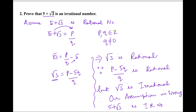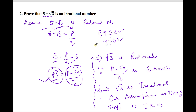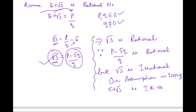Therefore, 5 + √3 is an irrational number. To summarise: first assume 5 + √3 is rational and write it in the form P/Q, where P and Q are integers and Q ≠ 0. Then isolate √3 to get √3 = (P − 5Q)/Q. This implies √3 is rational, but we know √3 is irrational. Therefore our assumption is wrong, and 5 + √3 is an irrational number.